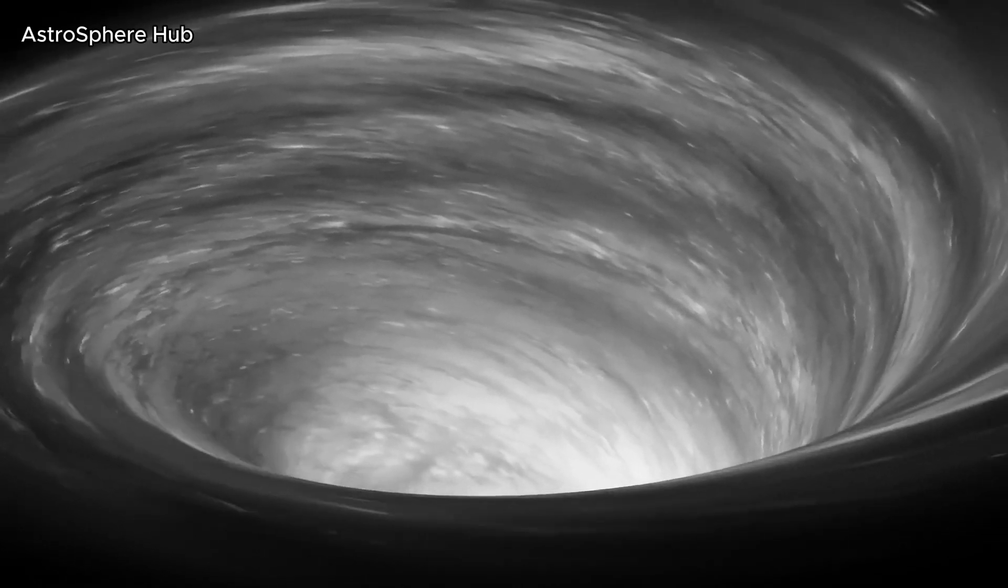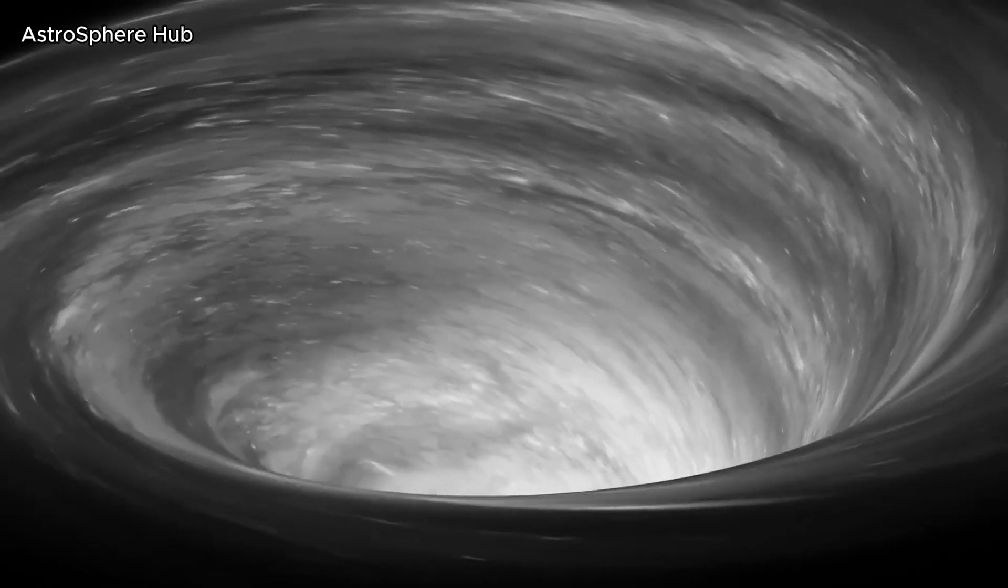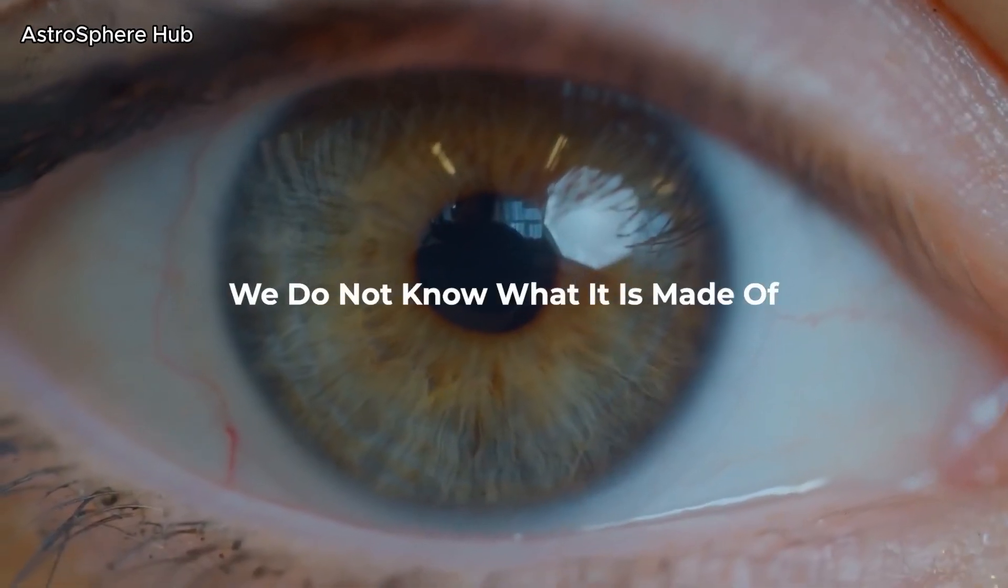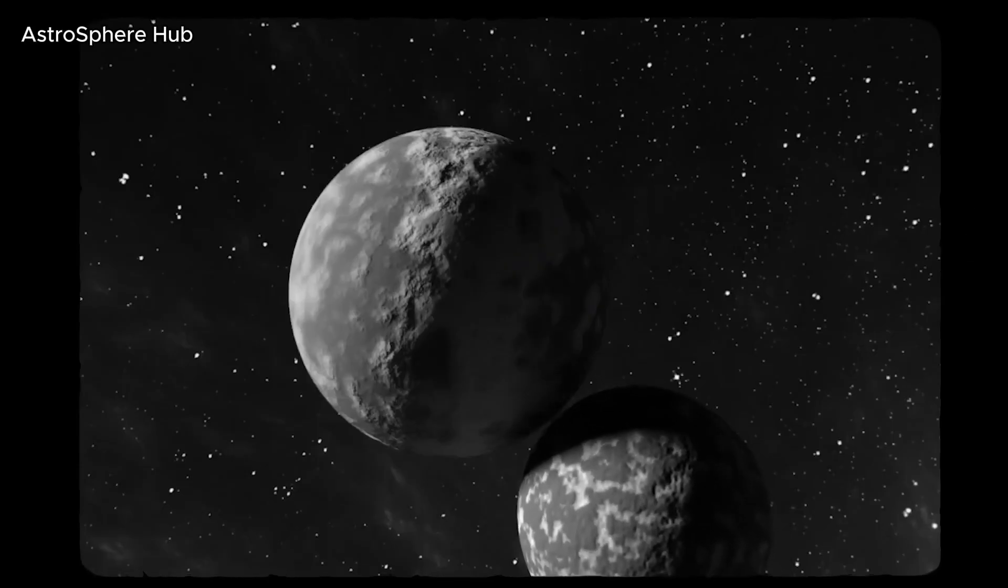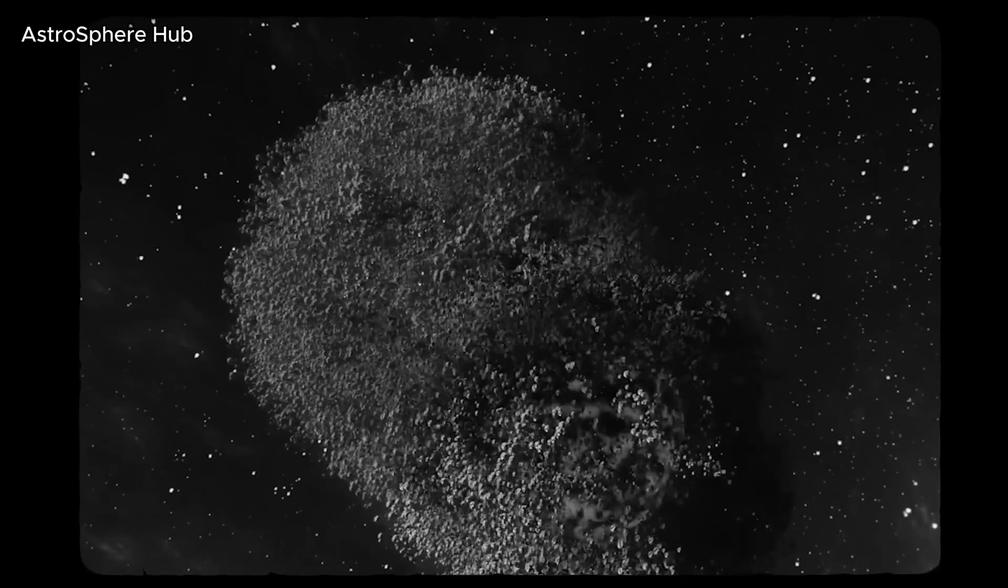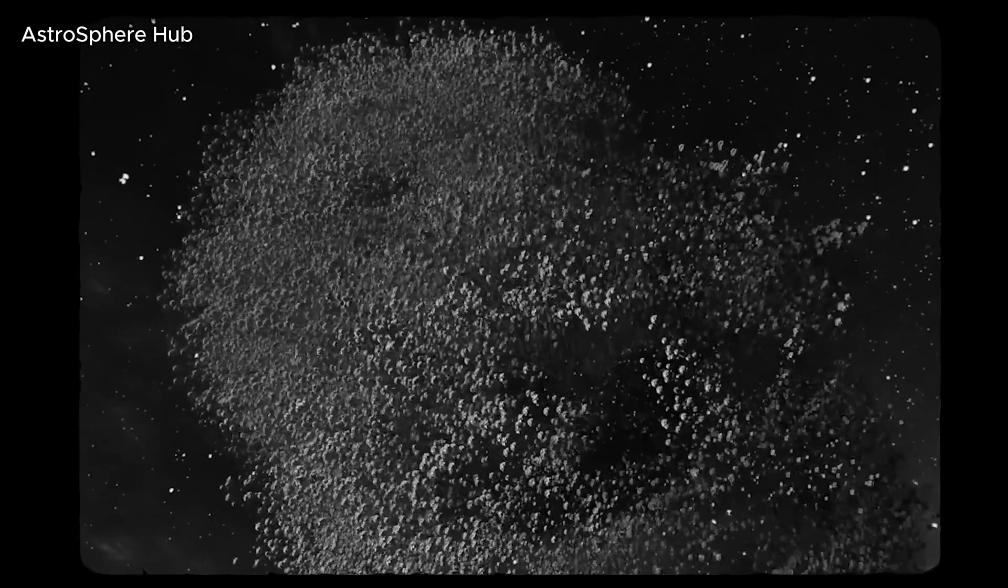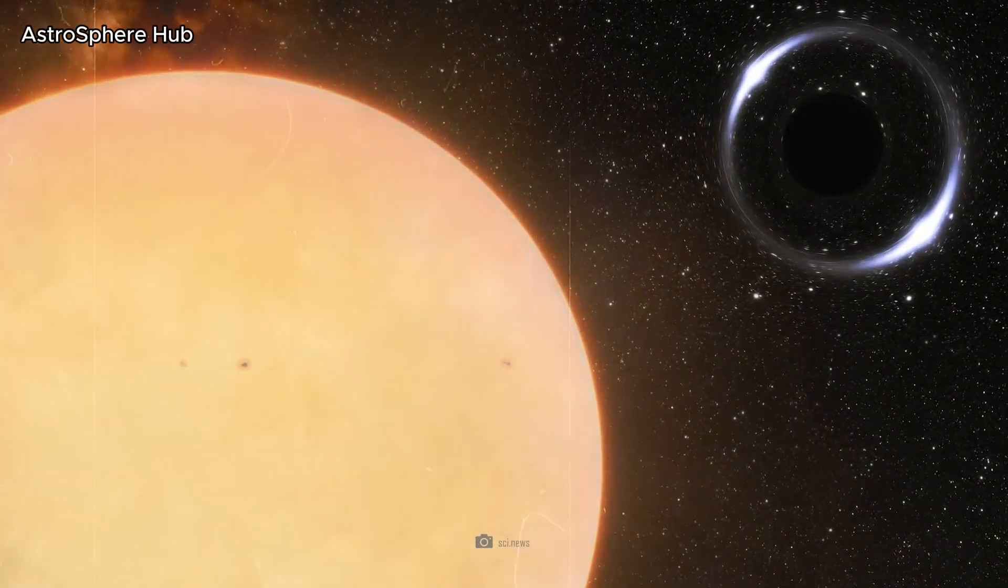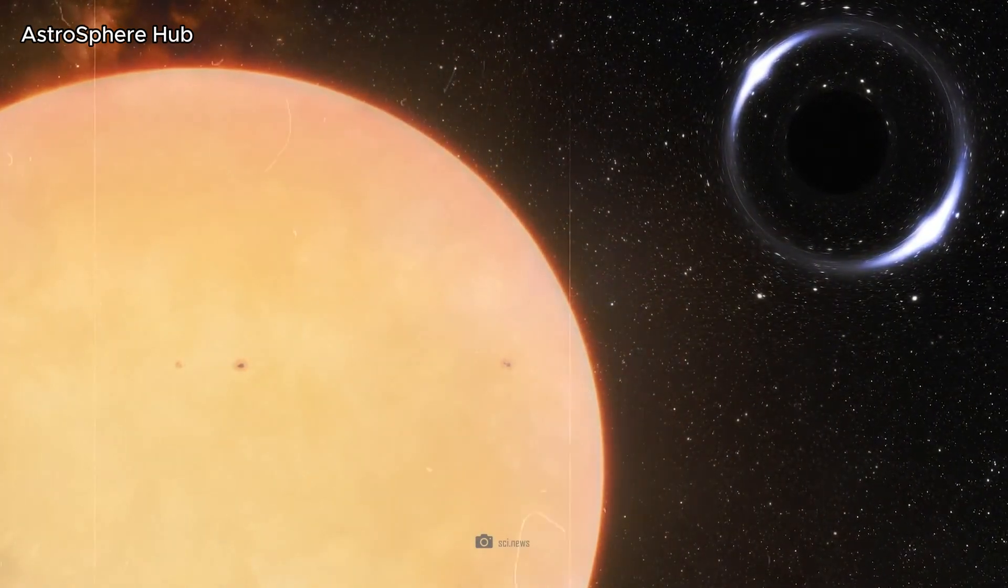The estimated age of the planet is around 12 million years. Scientists don't know exactly how such planets are formed, but they theorized that such objects were either unsuccessful stars, gas giants several times as large as Jupiter, or planets ejected from young planetary systems after encountering another planet and under the influence of its gravitational field.